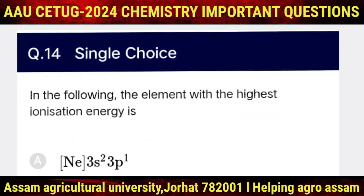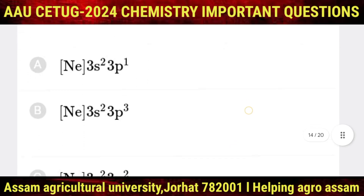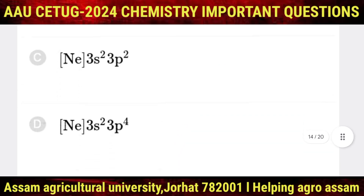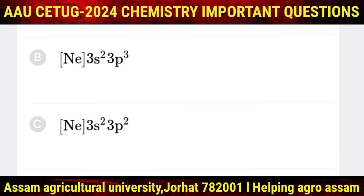Question number 14: the element with the highest ionization energy among the following — options A, B, C, and D. The correct option is B, which corresponds to [S]2 N3 P3.